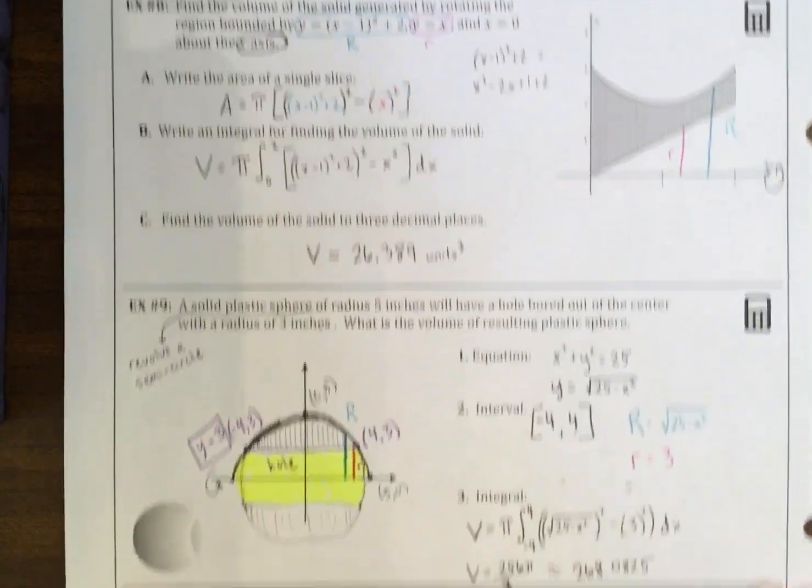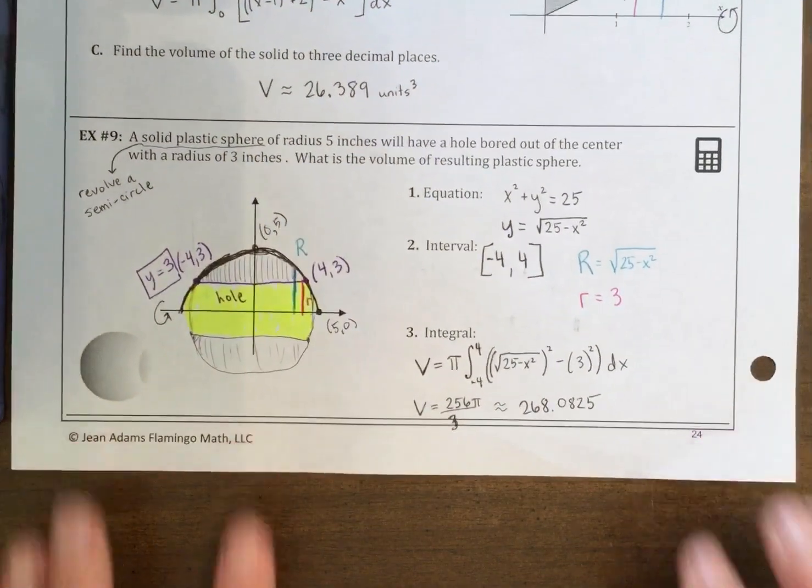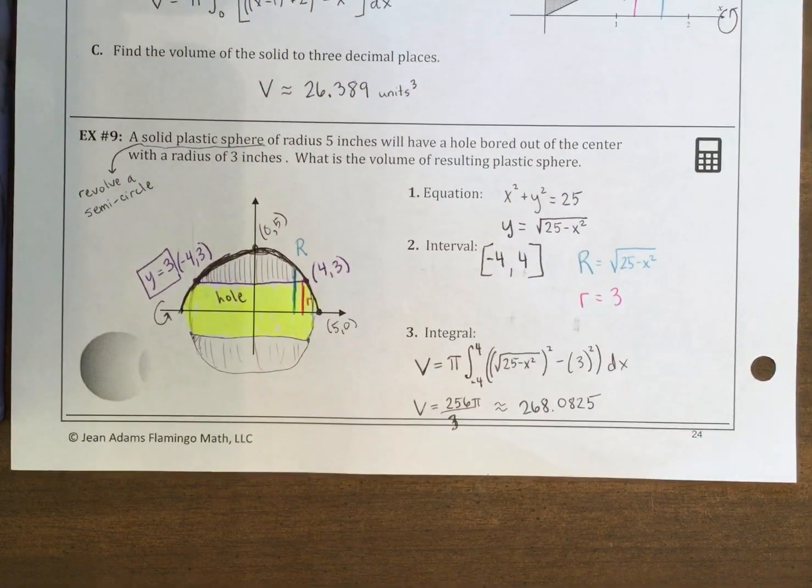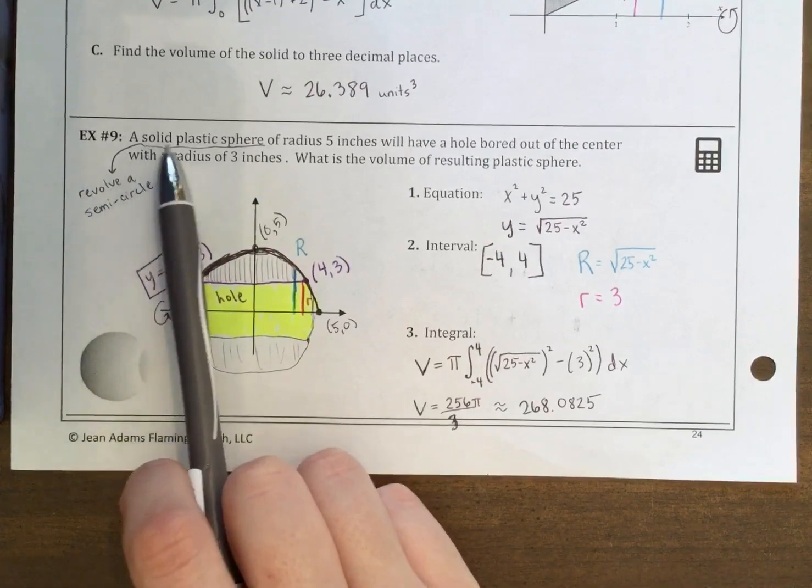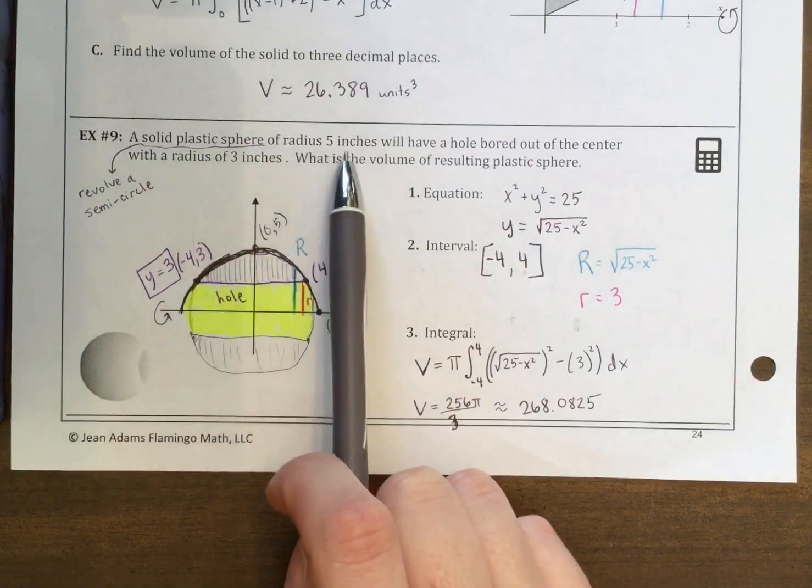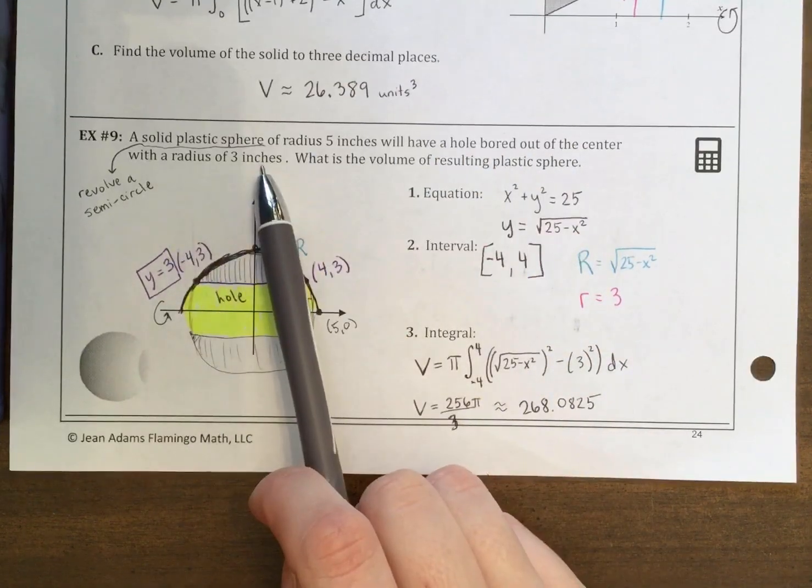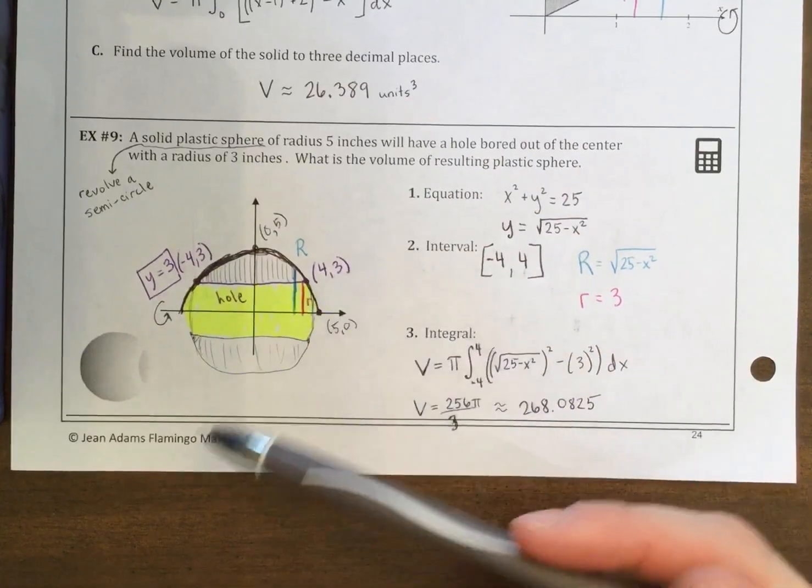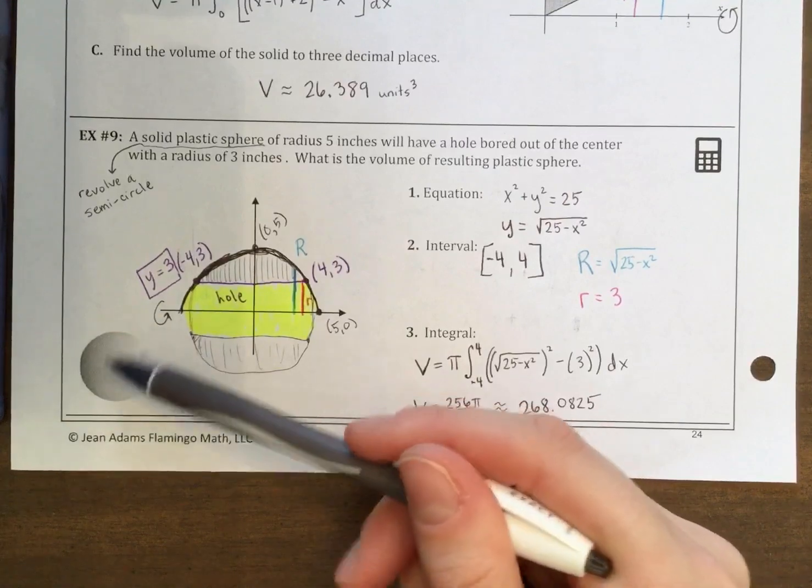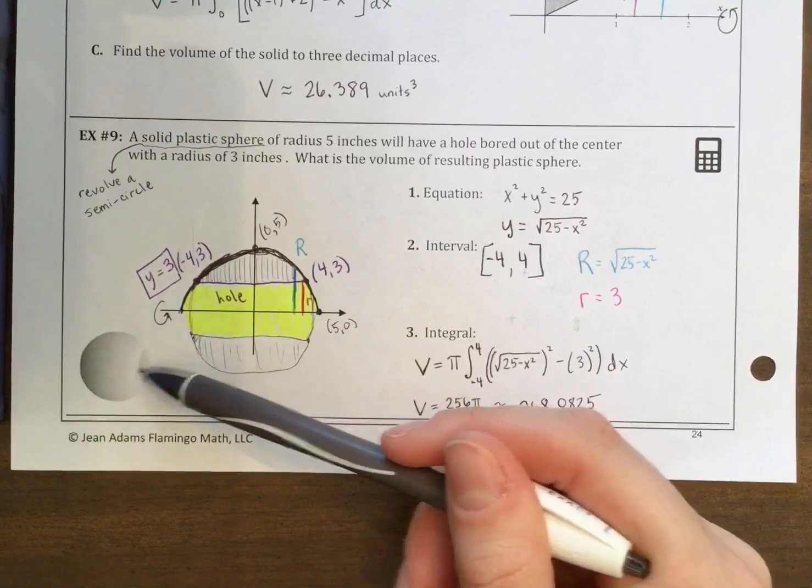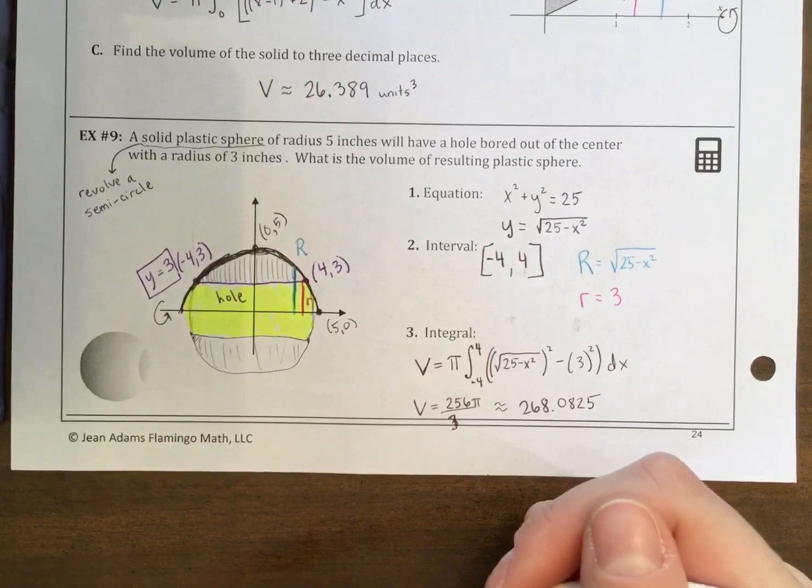For example 9, this one is a little bit more complicated, so you might have had some trouble wondering how to set this up when you got here. A solid plastic sphere of radius 5 inches is going to have a hole bored out of the center with a radius of 3 inches. So when we're thinking about this, I'm thinking about a picture of a sphere, kind of like a bead that has a hole bored through it so that you can put it on a necklace or something.